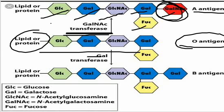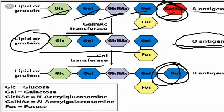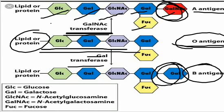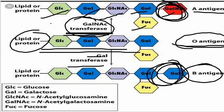And if you add a simple galactose molecule to the O antigen, it will be converted into B antigen. So in summary: we have the O antigen, and if enzymes transfer N-acetylgalactosamine to it, it becomes A antigen; if we add galactose, it becomes B antigen. This is very important.